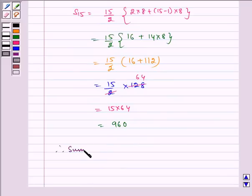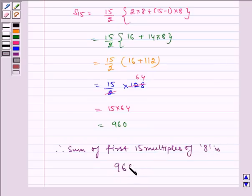Therefore, sum of first 15 multiples of 8 is 960. I hope you understood the question. Bye and have a nice day.